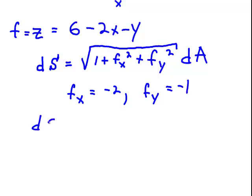So that ds in this particular case, the area of an infinitesimally small patch of surface on the plane, is the square root of 1 plus negative 2 squared, which is plus 4, plus negative 1 squared, plus 1. So we get the square root of 6.